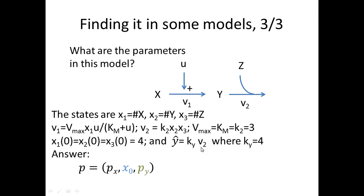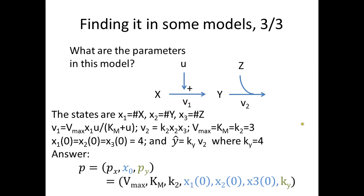To sum up: we have three rate constants, three initial conditions, and a new scaling parameter. The short story of identifying parameters is to look for these three types — dynamic parameters, initial conditions, and measurement parameters — then decide afterwards which are known and which are unknown. That's it for this video.